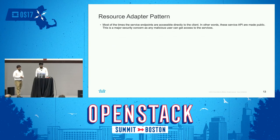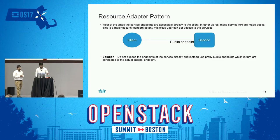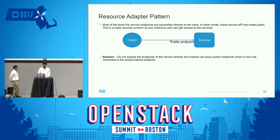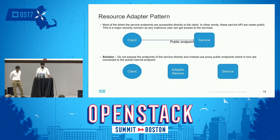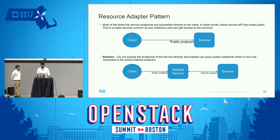Next is the resource adapter pattern. Most of the time we identified that a service has a public endpoint, meaning anyone outside the application can directly access the service — a major security concern. With the resource adapter pattern, you don't expose the public endpoint directly to the client. Instead, you have an adapter service between the request and the actual service. The public endpoint shifts to the adapter, while the actual business logic service has an internal endpoint. The adapter validates incoming requests, forwards only legitimate ones, and handles requests that shouldn't reach the service logic.